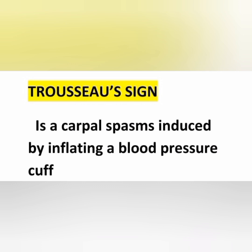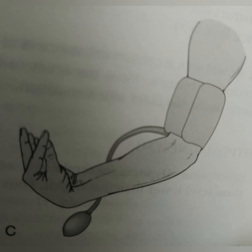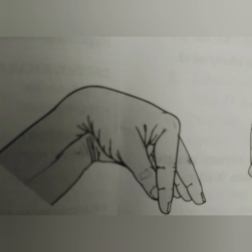Trousseau sign is a carpal spasm induced by inflating a blood pressure cuff. When we inflate the blood pressure cuff, the patient will experience carpal spasm — spasm of the carpal bones and a twitching movement — and that is called the Trousseau sign, as seen in the picture. Both Chvostek and Trousseau signs are positive in hypocalcemia.